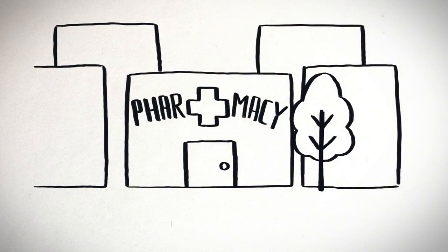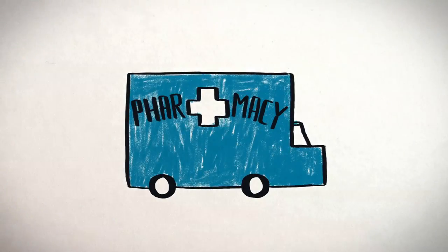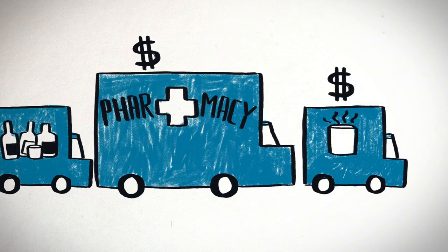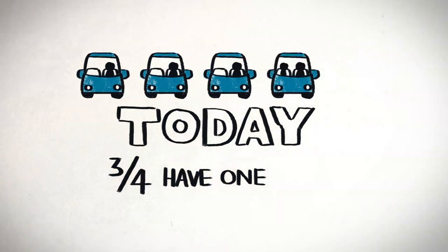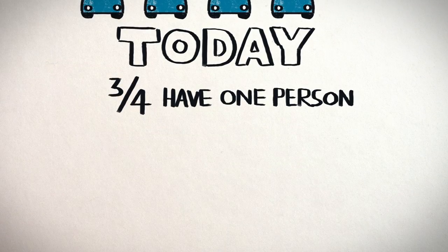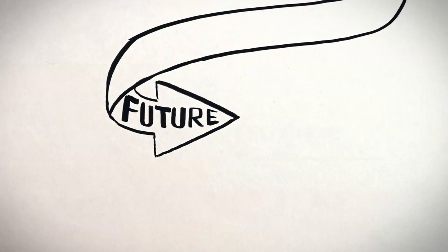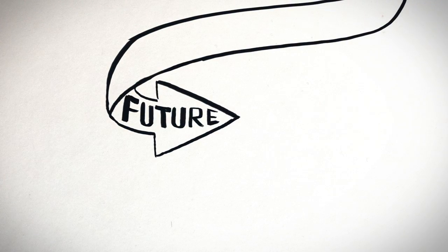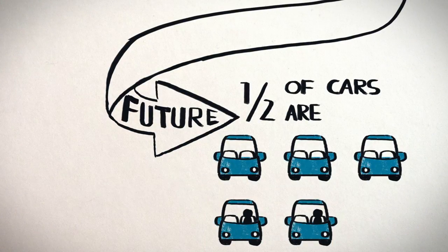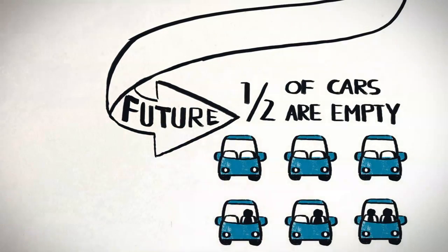The same is true for stores. It could be cheaper to have a drugstore car drive to customers than to pay for retail space downtown. Today, 75% of all cars on the road have one occupant, the driver. In the future, as we add more cars operating with their different economics, 50% of the cars will have no people in them, running low-value errands or avoiding parking.